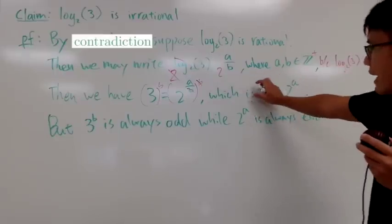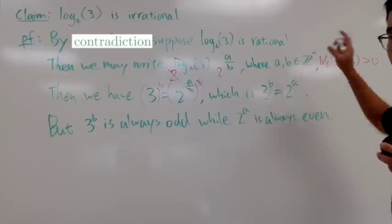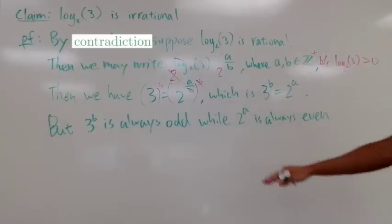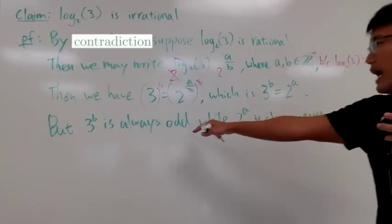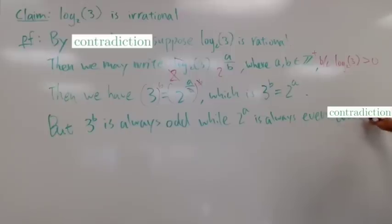Of course, when you have an odd number on the left-hand side being equal to an even number on the right-hand side, that doesn't make sense. So you can say 3 to the b is always odd while 2 to the a is always even, which is a contradiction. And you can just say this is bad. You can just put down contradiction and it can be cool.